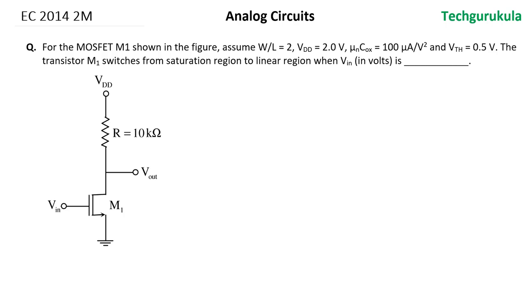This question came in 2014 for EC for two marks. The question is for the MOSFET M1 shown in the figure, assume W/L is equal to 2, VDD equal to 2 volts, and μₙCₒₓ is given which is 100 microampere per volt squared, and the threshold voltage is given 0.5 volts. The transistor M1 switches from saturation region to linear region when Vᵢₙ in volts is blank.